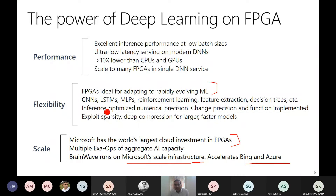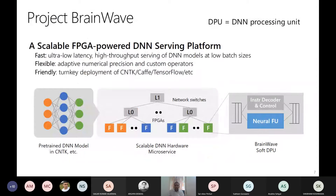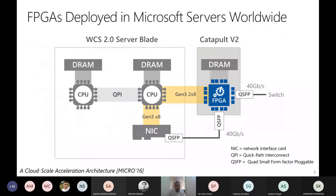In machine learning there are many model types — not just neural networks but also LSTMs, RNNs, MLPs, reinforcement learning, feature extraction, and decision trees. If you were to use an ASIC you'd have to design one ASIC for each of them. But with FPGAs, although you don't get as high performance as an ASIC, a single FPGA can work for many of them and give reasonably good performance.